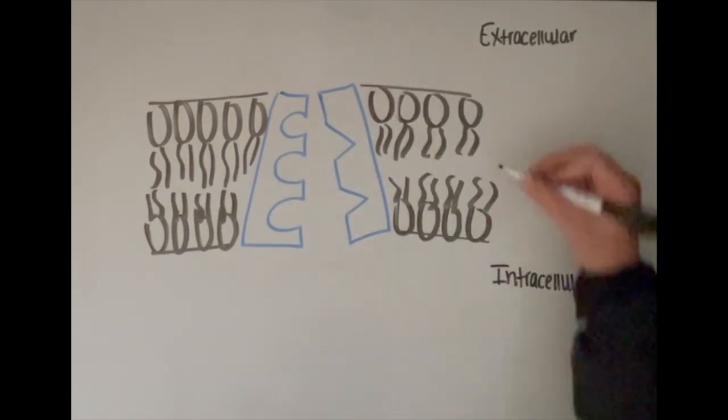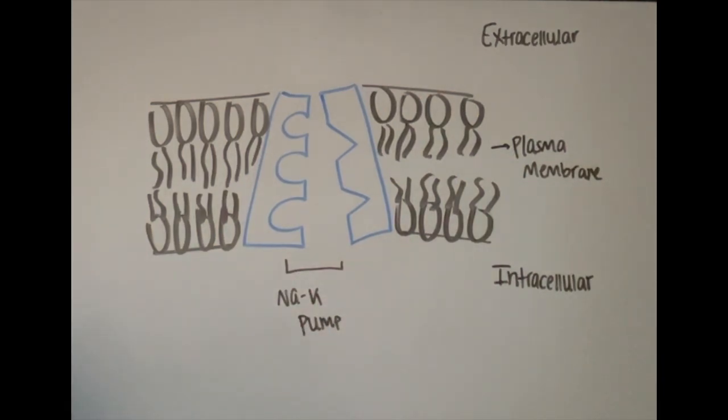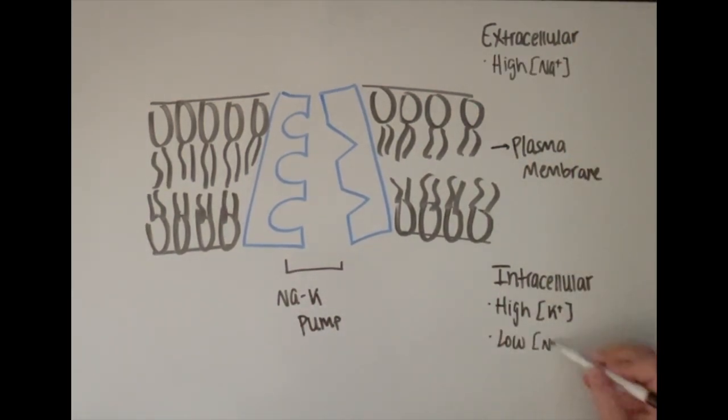But how? Here we have the plasma membrane that the sodium potassium pump is embedded in. Over here we have the intracellular side with a high concentration of potassium and the extracellular side which has a high concentration of sodium.